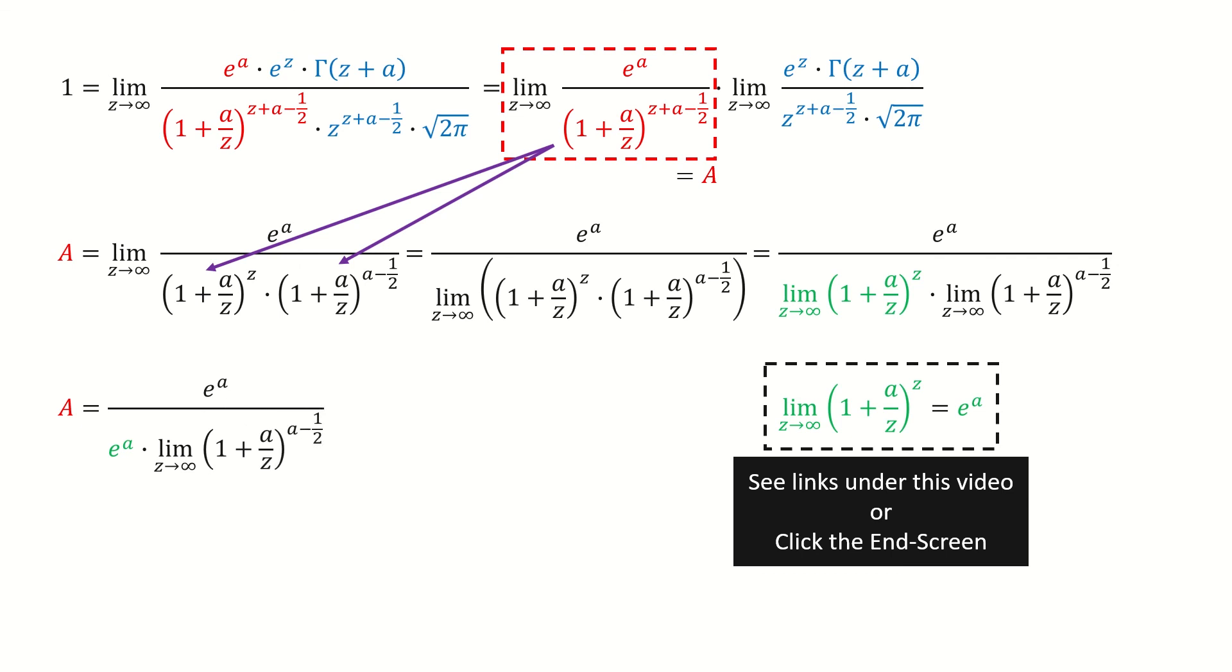Plug in and we go to here. They cancel out. The remaining limit is easy to compute. So we go to this limit equals 1.